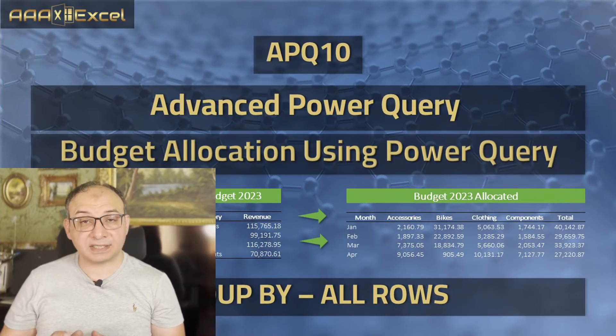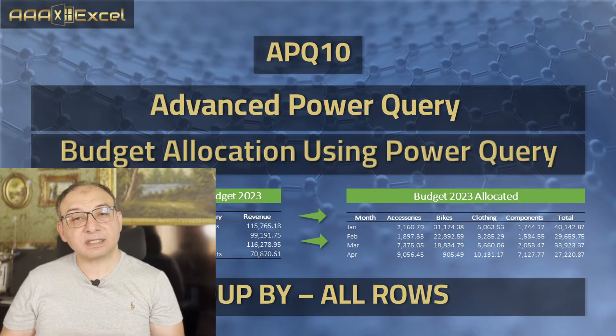Hello everyone. In many cases you may need to allocate some numbers — for example, if you have a total cost that needs to be allocated to stores or products, or as in our case, a total budget that needs to be allocated to different months. This is exactly what we are going to discuss in today's video, the 10th video of the Advanced Power Query series.